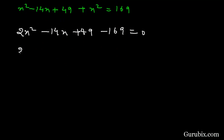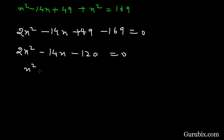This simplifies to 2X squared minus 14X minus 120 equals 0. Now we shall divide both sides by 2, giving us X squared minus 7X minus 60 equals 0.